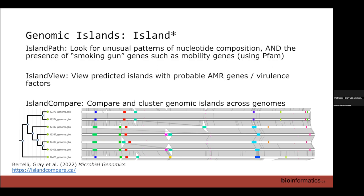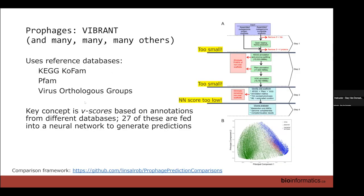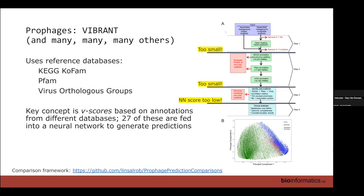IslandCompare compares previously identified genomic islands across genomes. VIBRANT is a prophage finder — one of dozens of very good prophage finders, but it's the one being used in one of the programs we'll profile in the lab, so it's worth spending a minute on it. It's a program that uses a combination of protein similarity and a neural network to predict the viral content of a genome from environmental data.